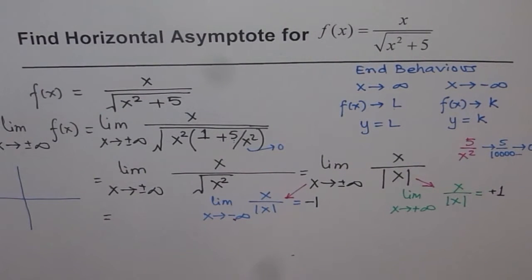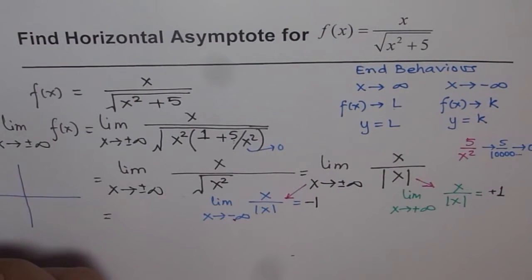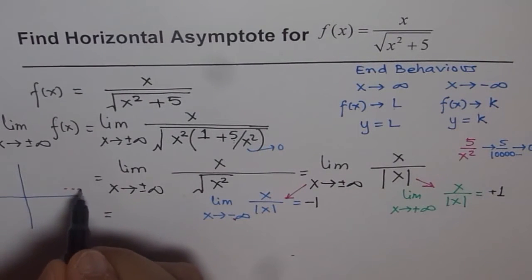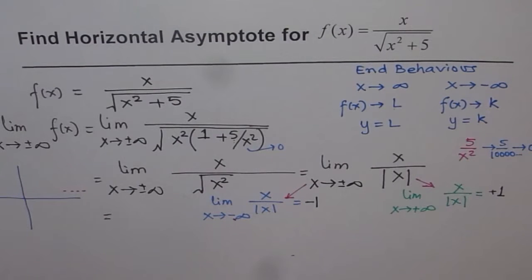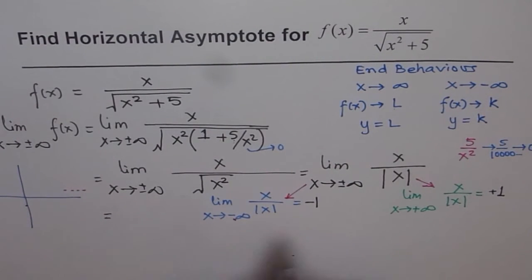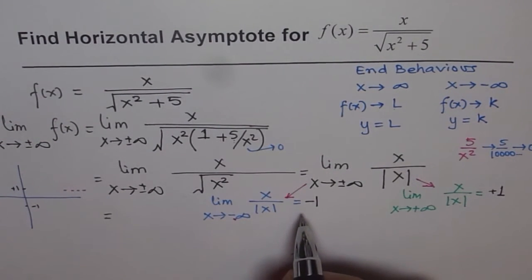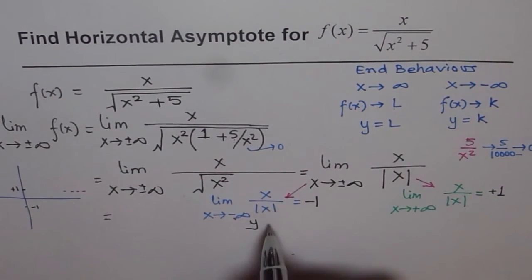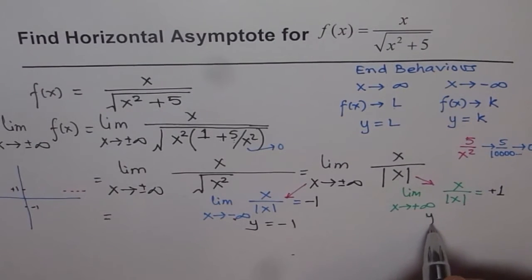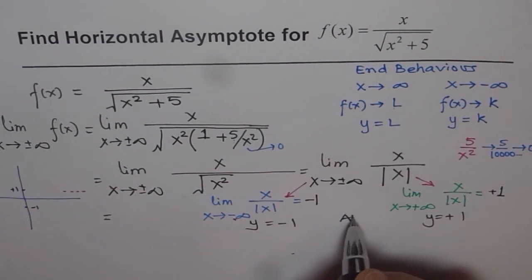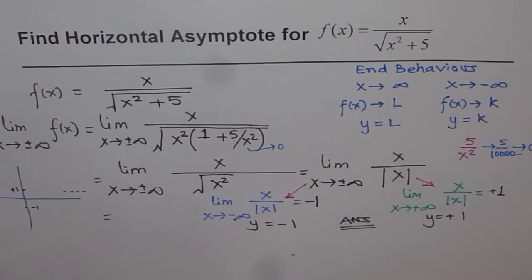So we get two asymptotes in this particular case. As x approaches negative infinity, the asymptote is at y = −1, and as x approaches positive infinity, the asymptote is at y = +1. These are our two answers. So in such cases we do get two horizontal asymptotes: y = −1 and y = +1.